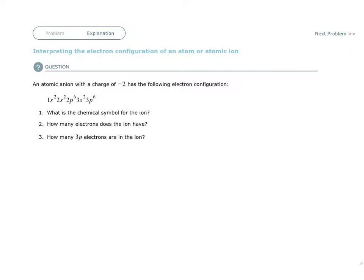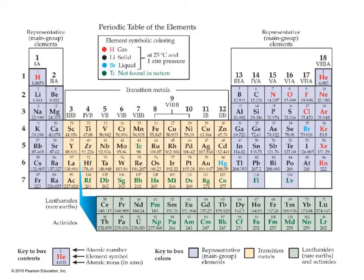It's a negative 2 ion. So first of all, I can almost guess what it is now. If it's negative 2 and it has the configuration of argon, then that means it has to be 2 less than argon, which is sulfur.